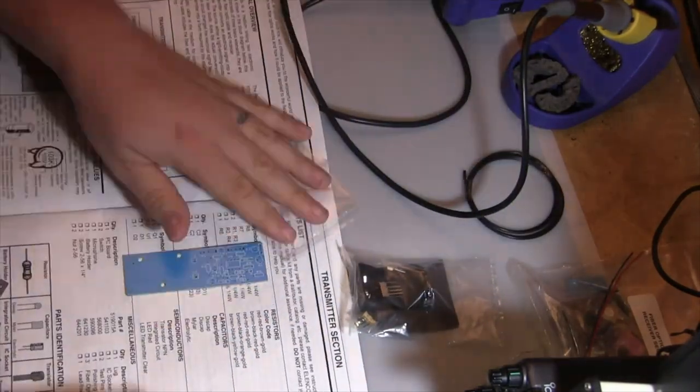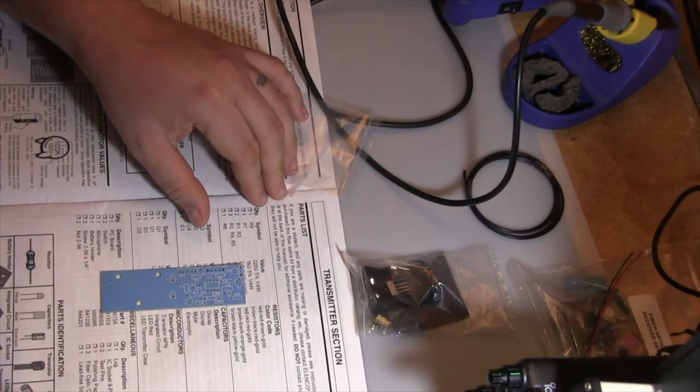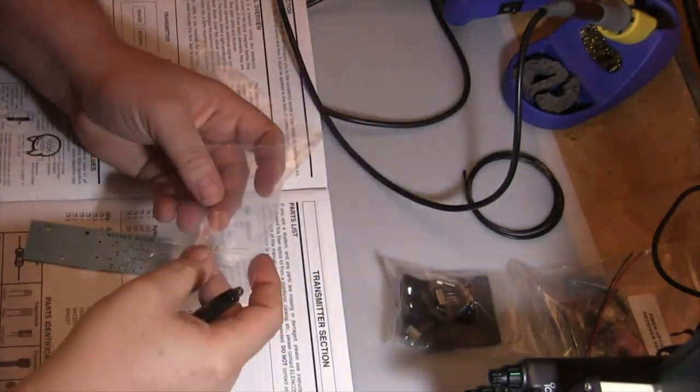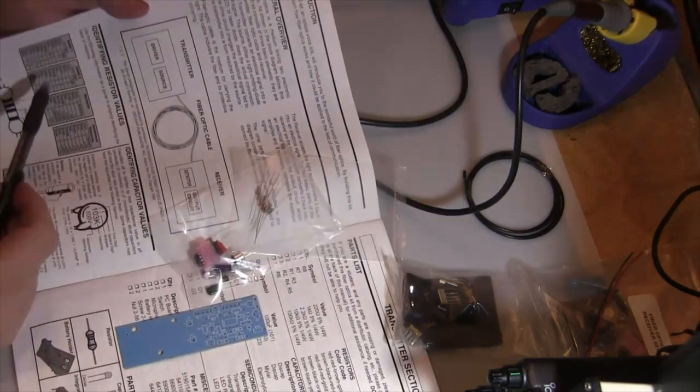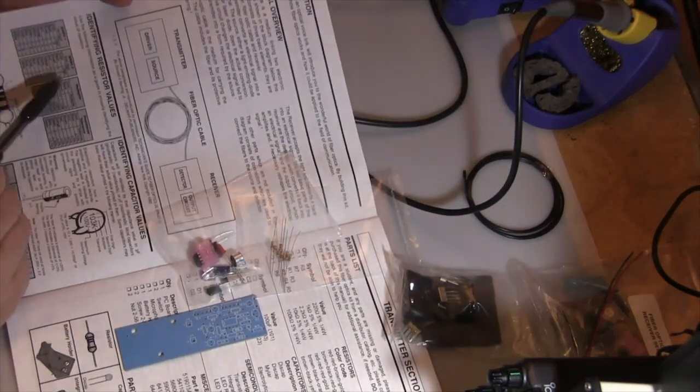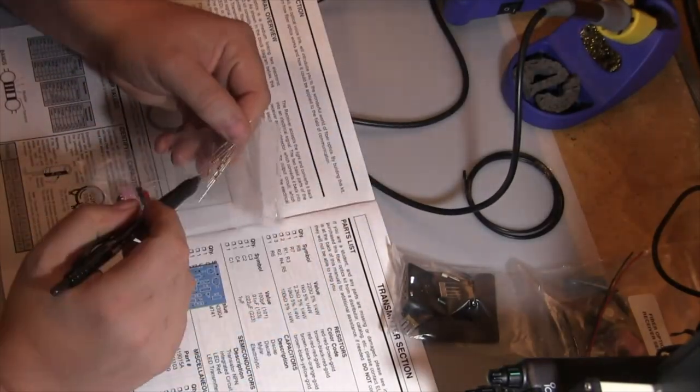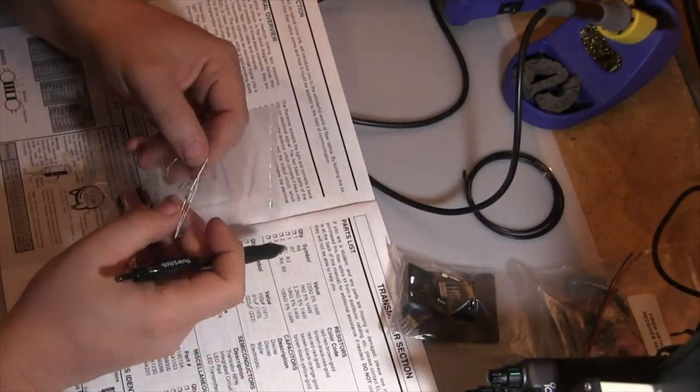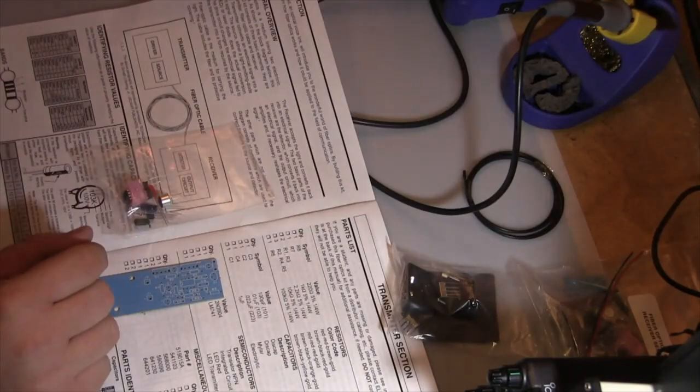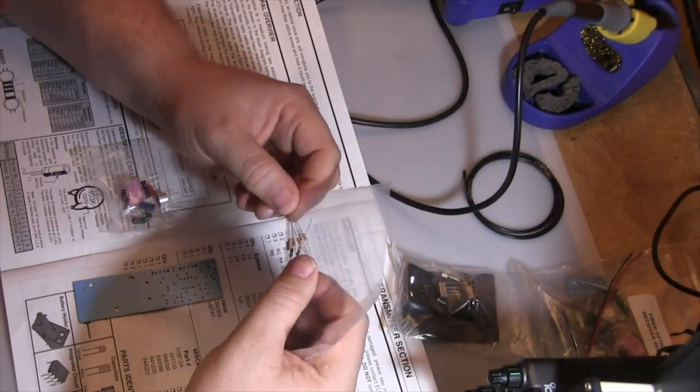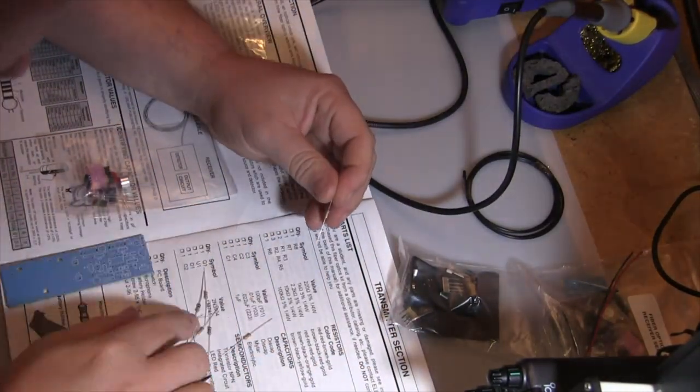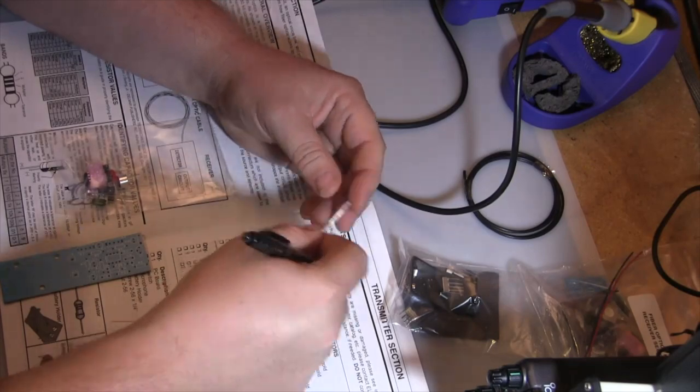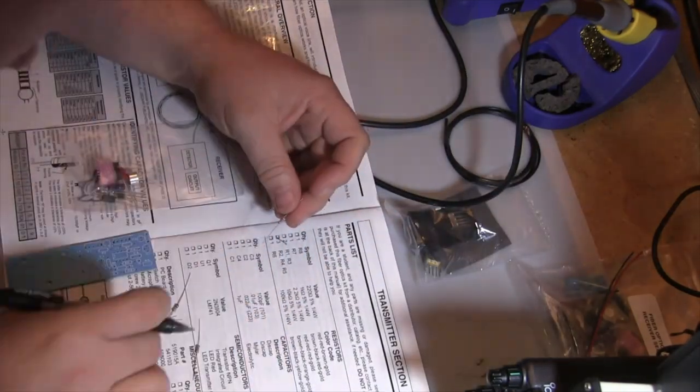You see here you got a printed circuit board, a fiber optic cable, it even came with solder, and we have a checklist of everything that came with it. Right here is a package of resistors. The kit even has the color code. This teaches every single bit of information that you need to know about the electronics.